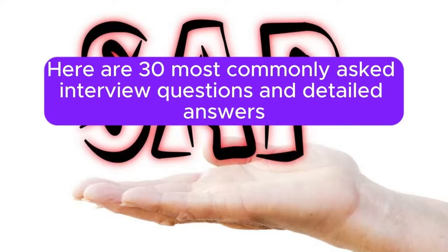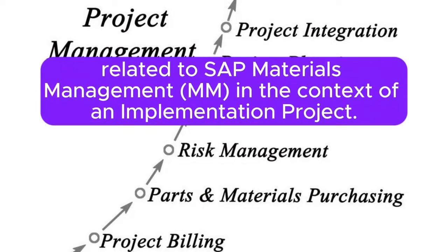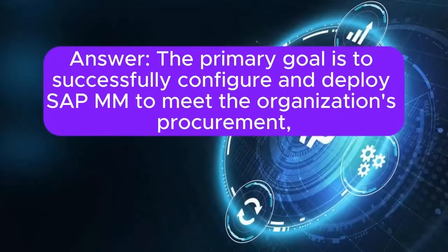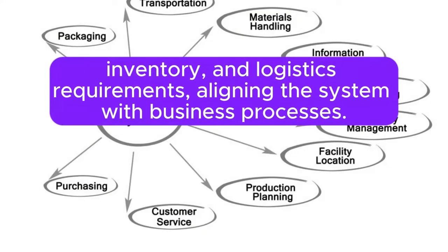Here are 30 most commonly asked interview questions and detailed answers related to SAP Materials Management MM in the context of an implementation project. Question 1: What is the primary goal of an SAP MM implementation project? Answer: The primary goal is to successfully configure and deploy SAP MM to meet the organization's procurement, inventory, and logistics requirements, aligning the system with business processes.